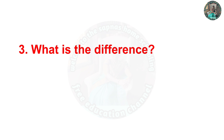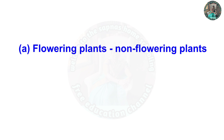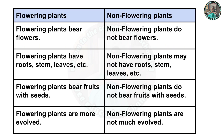Third question: what is the difference? A — flowering plants and non-flowering plants. First difference: flowering plants bear flowers; non-flowering plants do not. Second difference: flowering plants have roots, stem, leaves, etc.; non-flowering plants may not have roots, stem, or leaves. Third difference: flowering plants bear fruits with seeds; non-flowering plants do not. Fourth difference: flowering plants are more evolved; non-flowering plants are not much evolved.